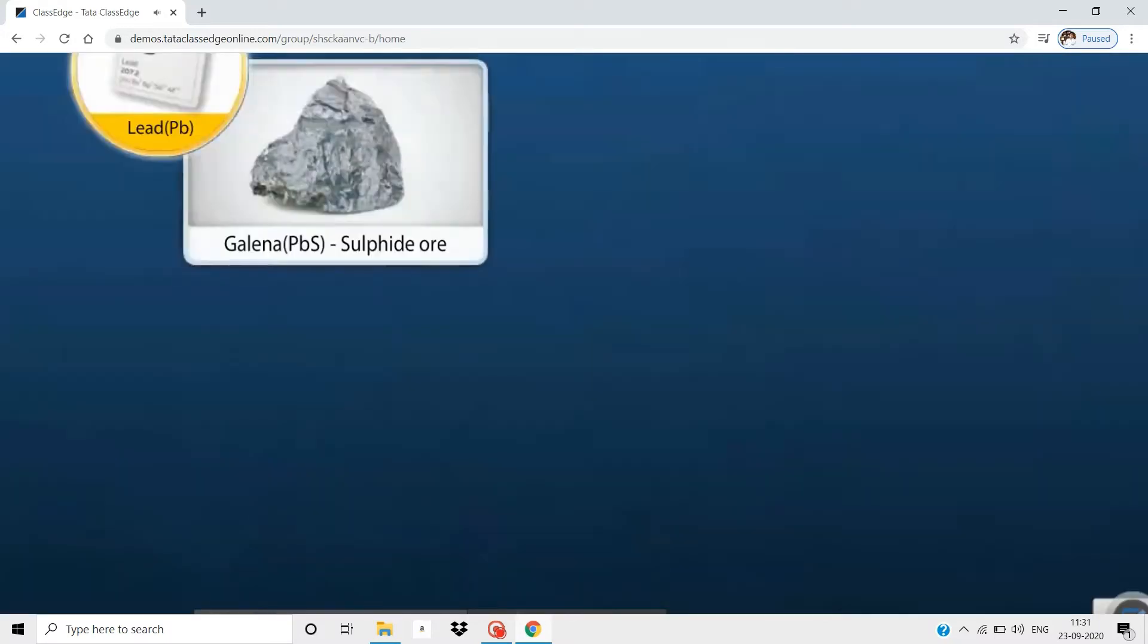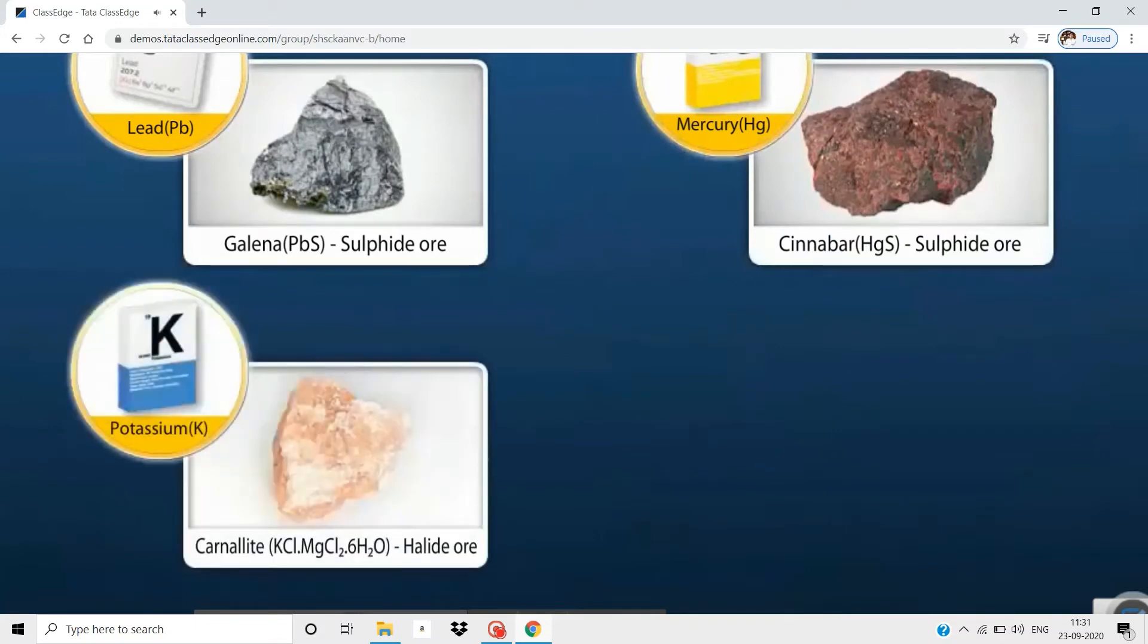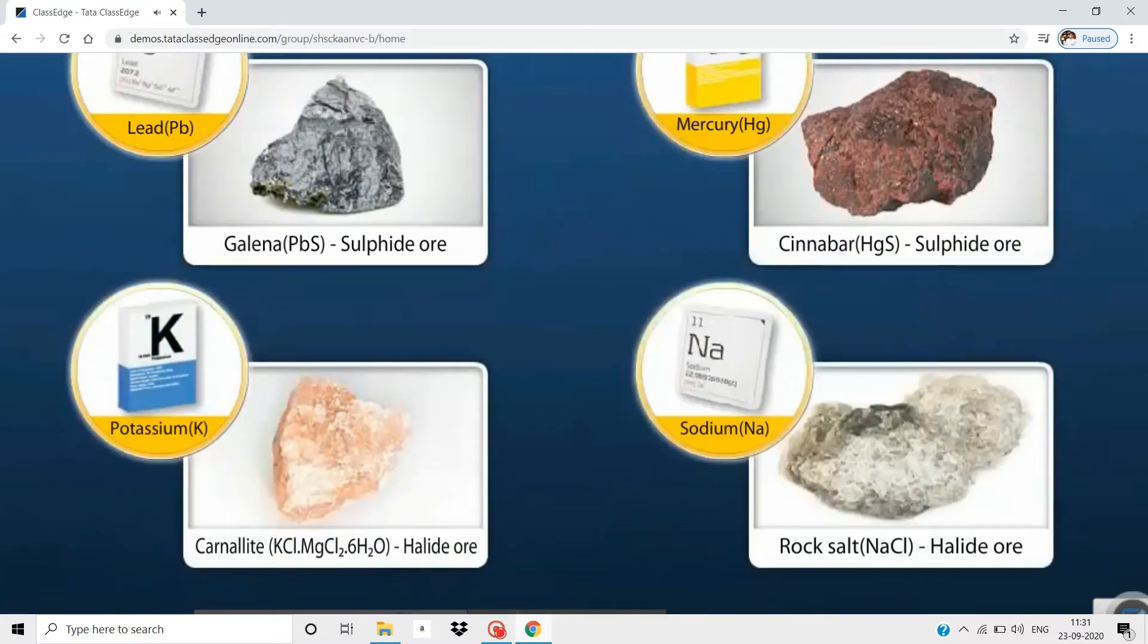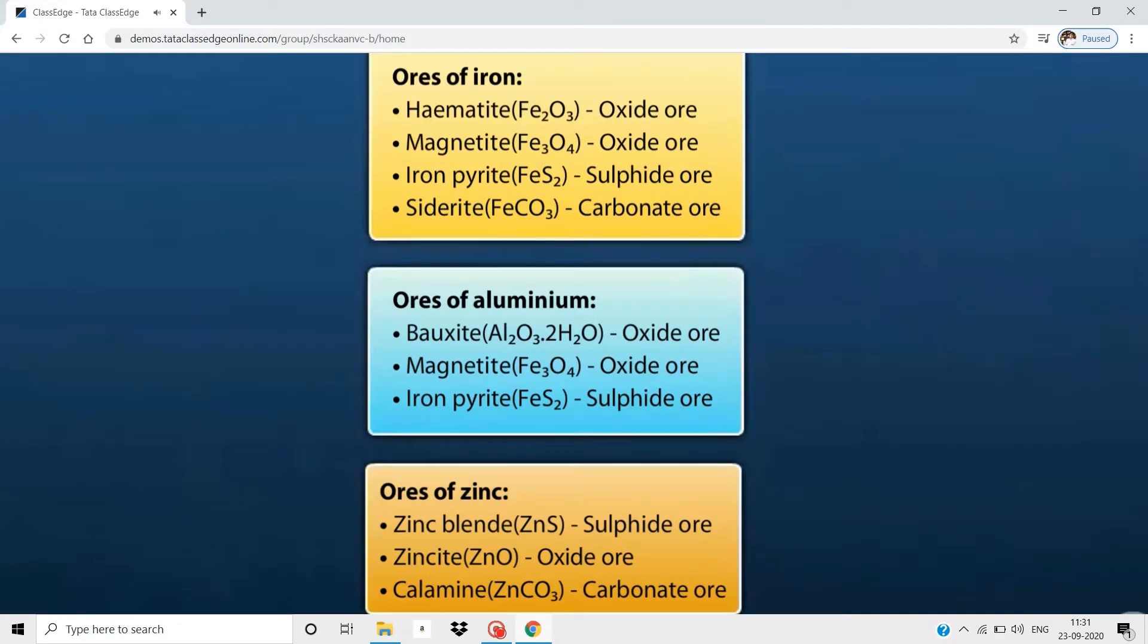Lead can be extracted from galena, mercury from cinnabar, potassium from carnalite, and sodium from rock salt. Let's summarize what we have learned about the occurrence of metals.